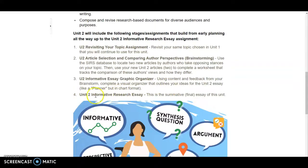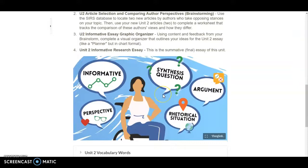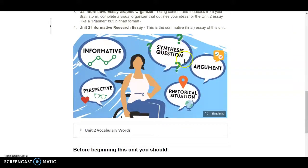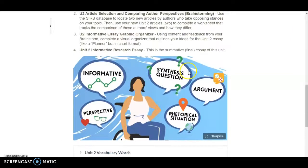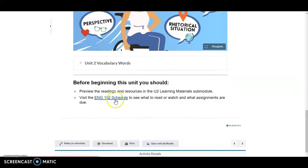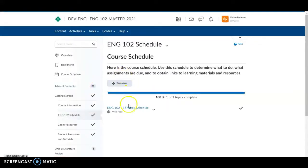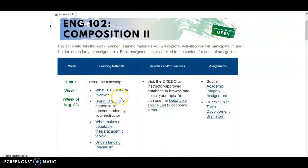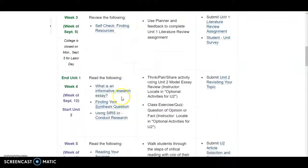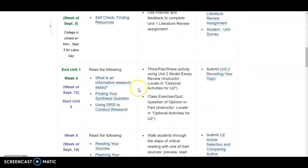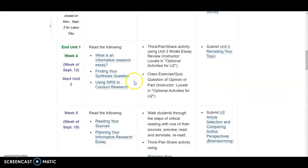Finally, you will be writing an informative research essay. This is the summative, the final essay. You can always look at the schedule to see what you should be reading and doing at any given time during the unit. The unit is about three to four weeks, depending on whether you are taking this over a 15-week semester or an 11-week semester.